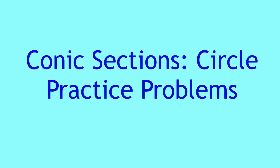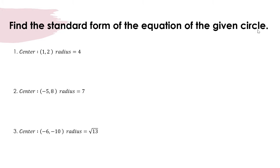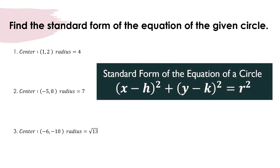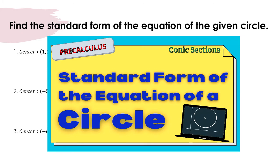This video shows how to answer some of the common practice problems on a circle. The standard form of the equation of a circle is given by the squared quantity of x minus h, plus the squared quantity of y minus k, is equal to r squared. Should you wish to know how to derive the standard form of the equation of the circle, you may watch this video.